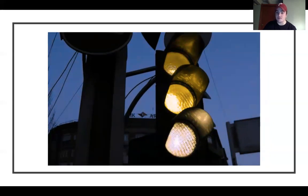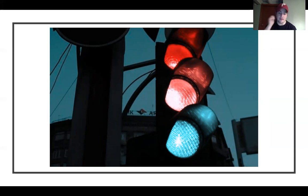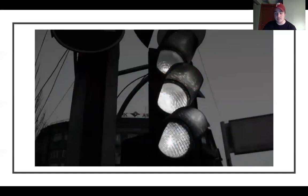Here's deuteranopia — the red and the green are kind of almost the same, the yellow a little more distinguished. Tritanopia makes the yellow look like a pink, but the green and the red are very distinguishable. I think protanopia and deuteranopia affect people who are driving a lot. And here's achromatopsia — it's just black, white, gray. It kind of looks like those old movies.